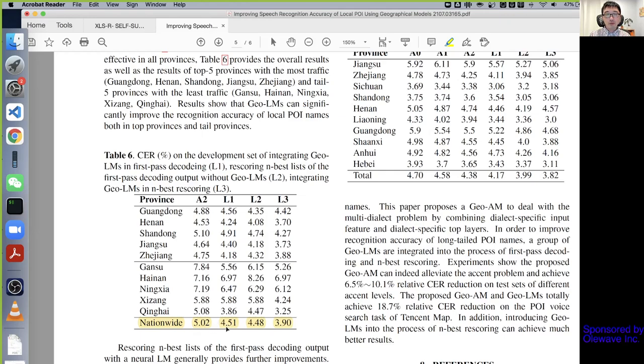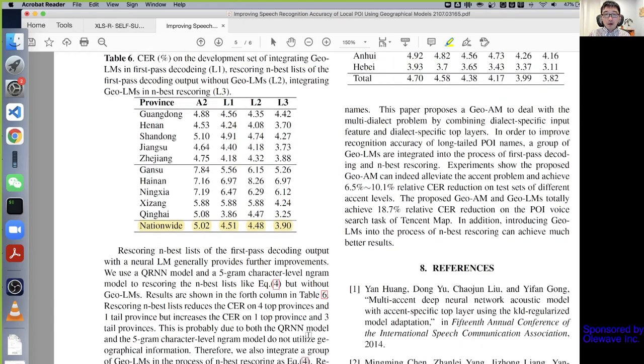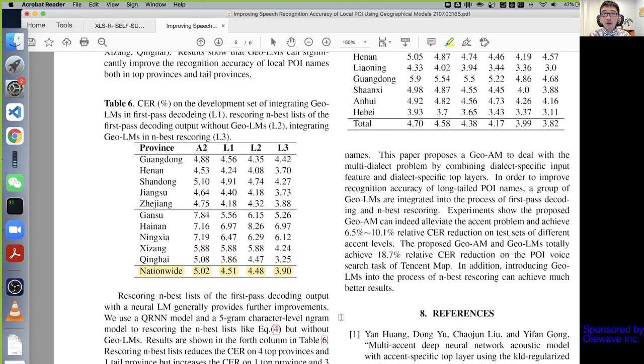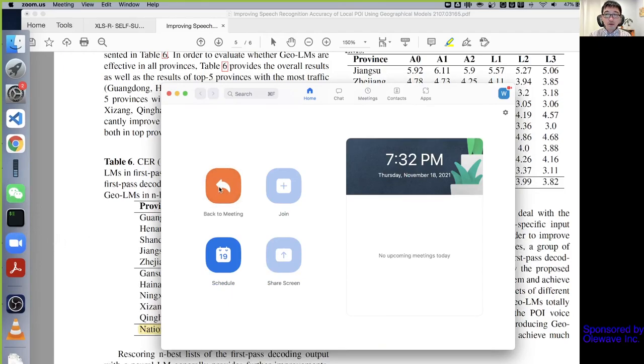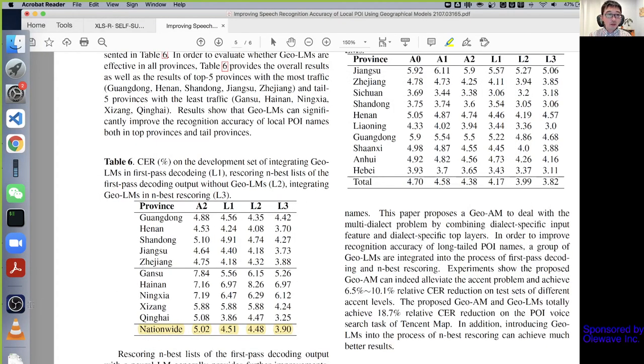Once you add the geo-based language model, very significant improvement, about 10%. Rescoring the n-best from the first pass decoding result without geo language model doesn't change much from L1. Then finally, the integrated neural network based geo language model in the rescoring, this result is amazing. You got further improvement, like 15% from L1. This is very significant. Big congrats to those authors, very nice work. I'm gonna stop here. Let's see if anybody has questions. Nobody has questions, let me stop here.